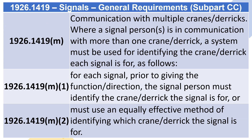1926.1419(M) — Communication with multiple cranes/derricks: Where a signal person is in communication with more than one crane/derrick, a system must be used for identifying the crane/derrick each signal is for, as follows. 1926.1419(M)(1) and (M)(2): For each signal, prior to giving the function/direction, the signal person must identify the crane/derrick the signal is for, or must use an equally effective method of identifying which crane/derrick the signal is for.